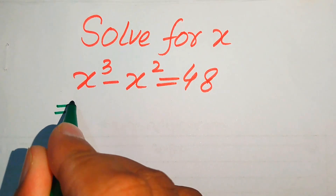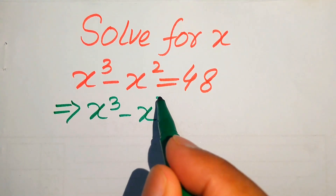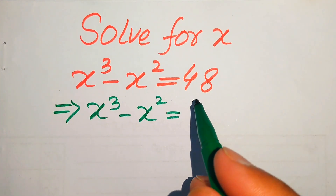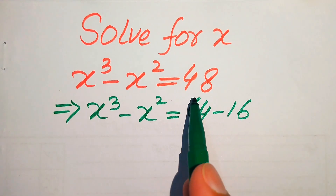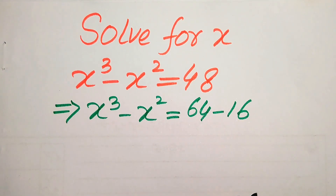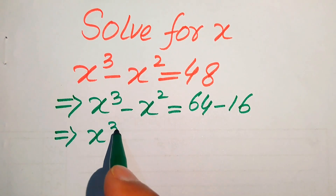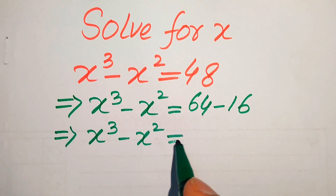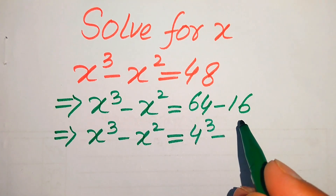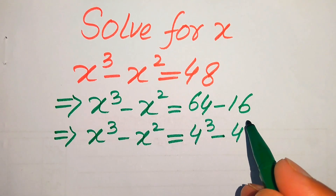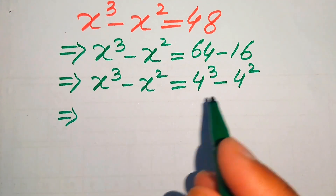First we need to focus on the right hand side. We have x cubed minus x squared, and now we break the right hand side 48 as 64 minus 16. So we write 48 as 64 minus 16, and further we write 64 as 4 cubed and 16 as 4 squared.